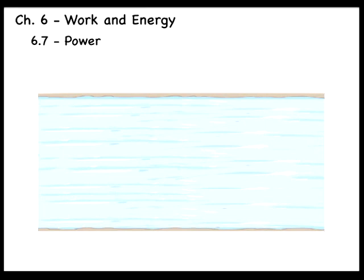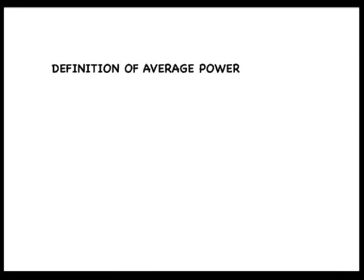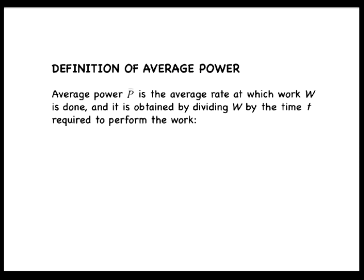The term powerful, used in this everyday context, is related to the formal definition of power as it is used in physics. In physics, we define the average power as the average rate at which work is done, and is obtained by dividing the work by the time t required to perform the work, or p bar equals w divided by t.